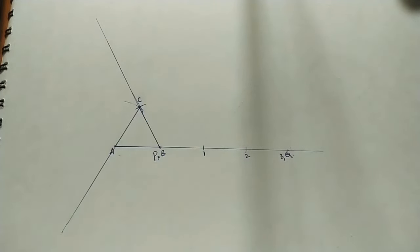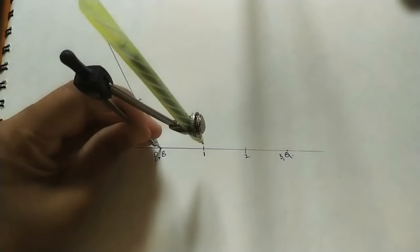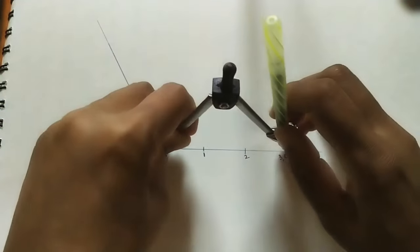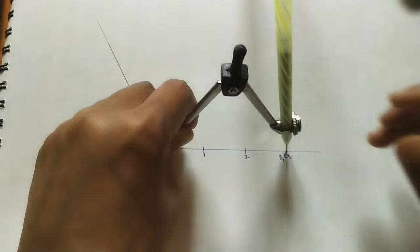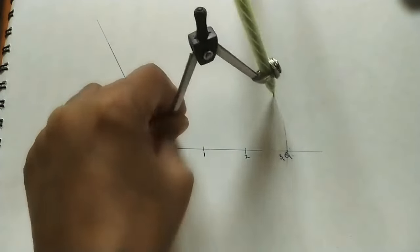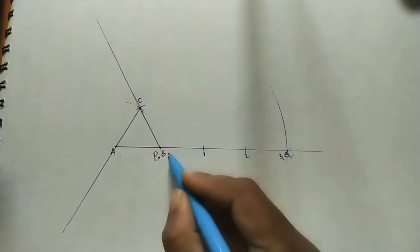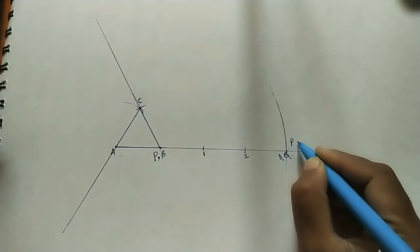On the first line mark P3 length, from P point to the third point. Mark this length here with a slightly bigger arc. Take this length as P3.